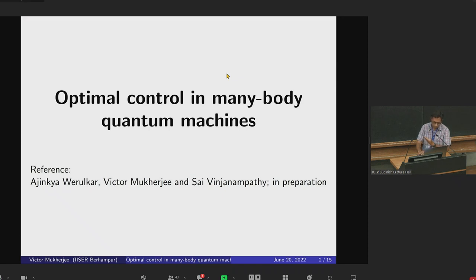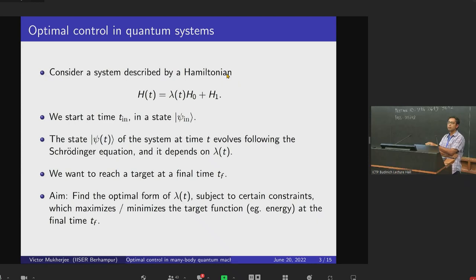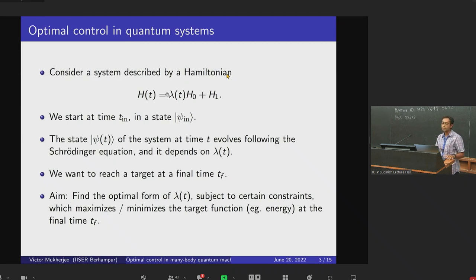What I mean by optimal control is: say we have a generic system with some generic Hamiltonian H(t), which can be written as a sum of two parts, H_0 and H_1. In general, H_1 is time-independent and something we cannot control, while H_0 is the control parameter, which is controlled through the tuning parameter λ(t).